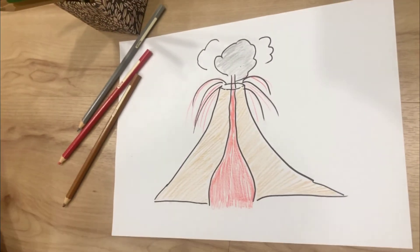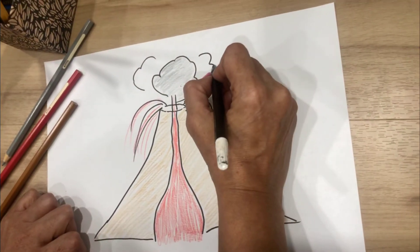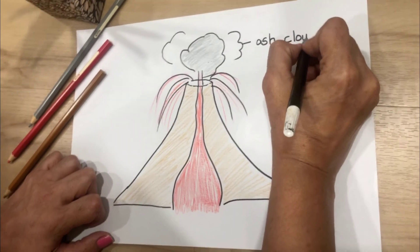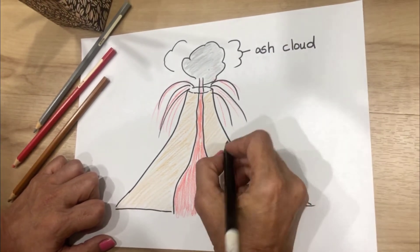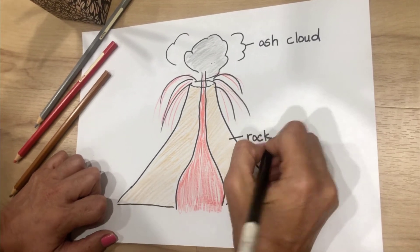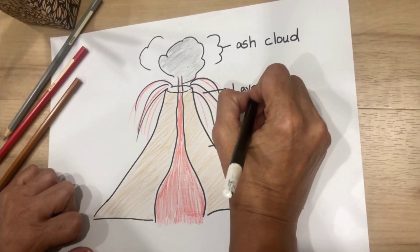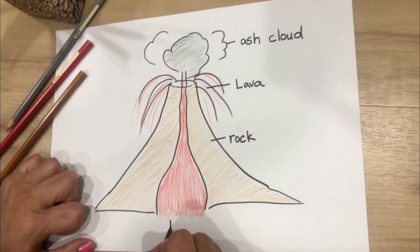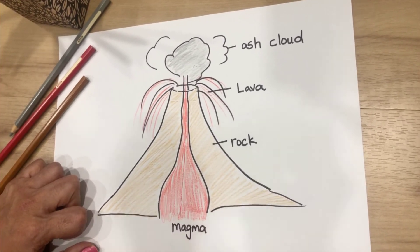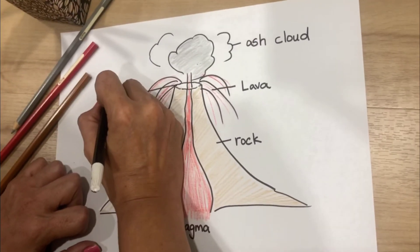Now, if you remember the names or you remember the parts of the volcano, you can write them down. Ash cloud. Rock. Lava. Magma. And this is called the crater.